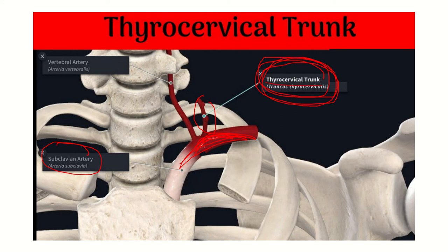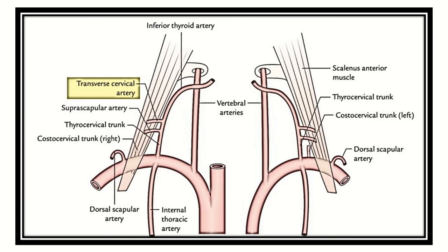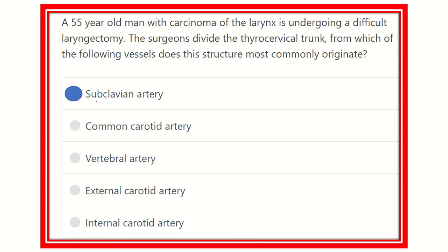From the subclavian artery, the thyrocervical trunk arises. We know that from the subclavian artery different arteries arise — one of them is the vertebral artery. In this picture we can see the thyroid cervical trunk arising from the subclavian artery. This trunk divides into different branches supplying the thyroid and cervical areas. The thyroid cervical trunk is an important artery that arises from the subclavian artery.